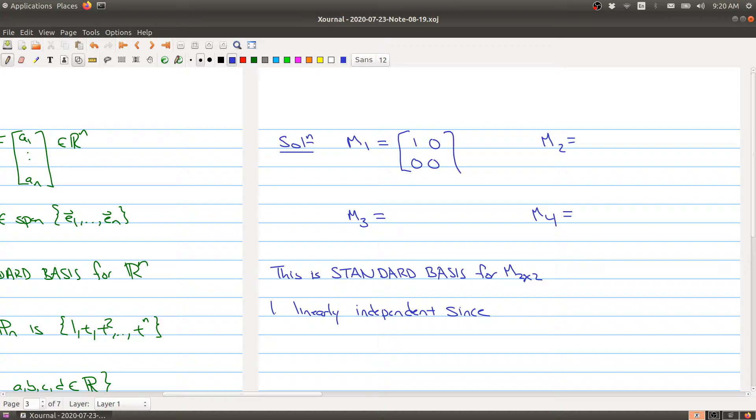The matrices are: [1,0; 0,0], then [0,1; 0,0], then [0,0; 1,0], and finally [0,0; 0,1]. So we have a 1 in one spot of the matrix and the rest of the entries are 0, and we do this for all possible places you can put the 1.